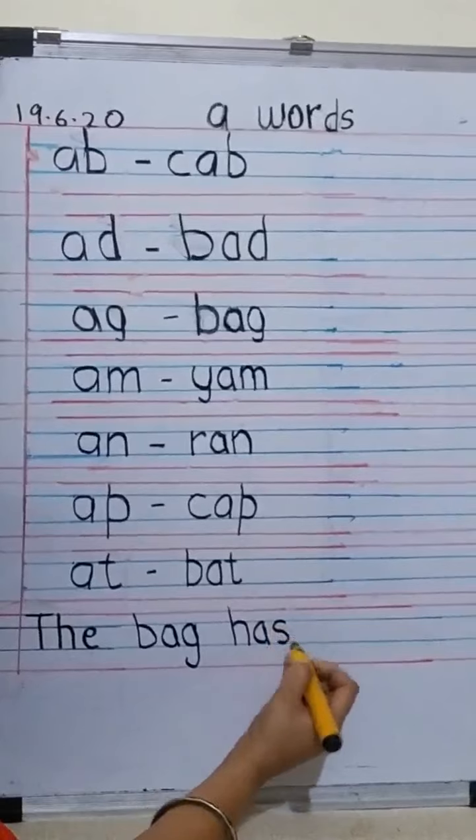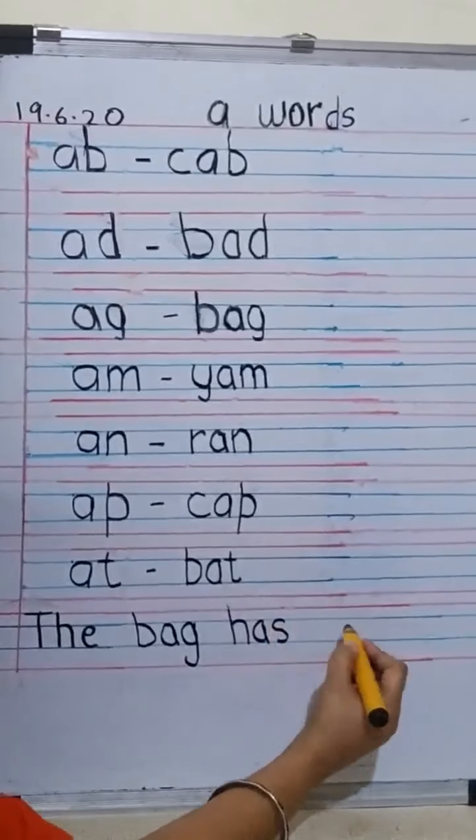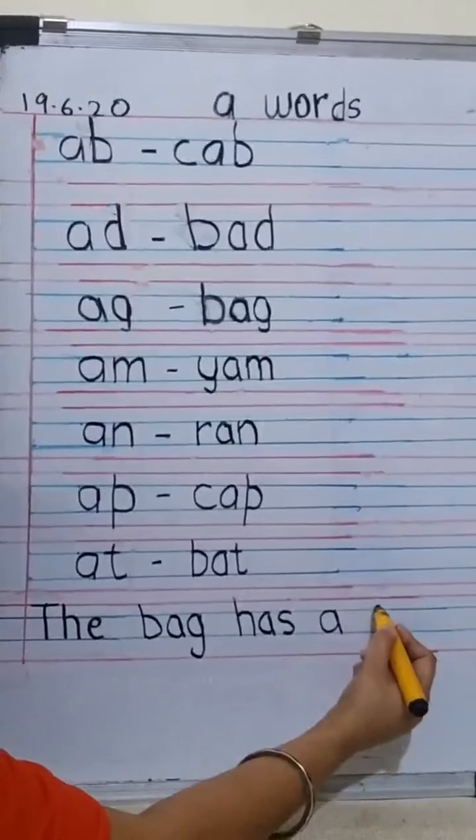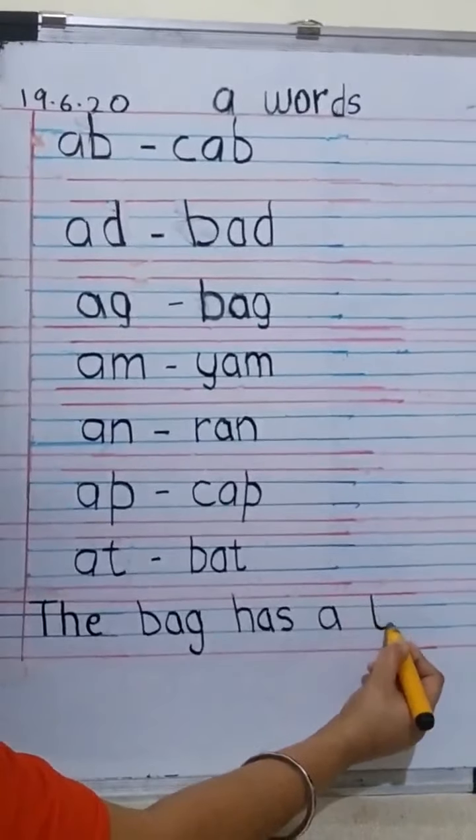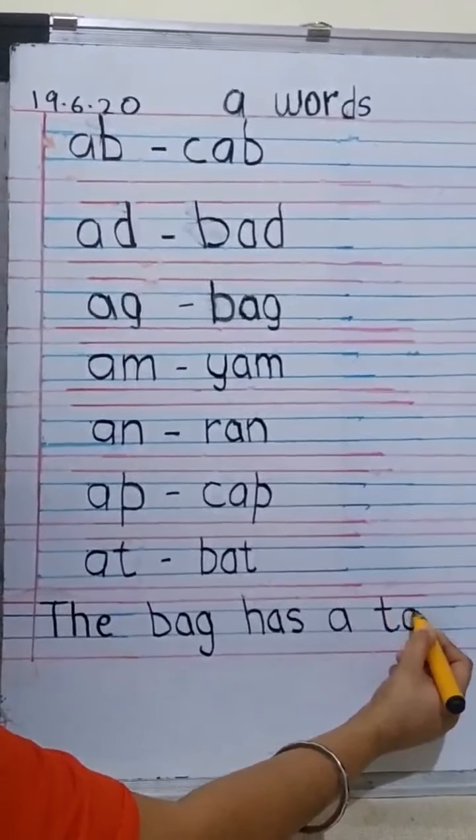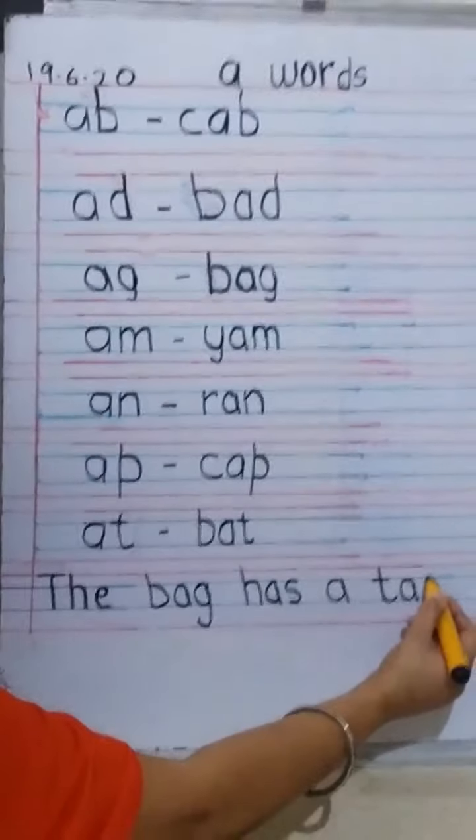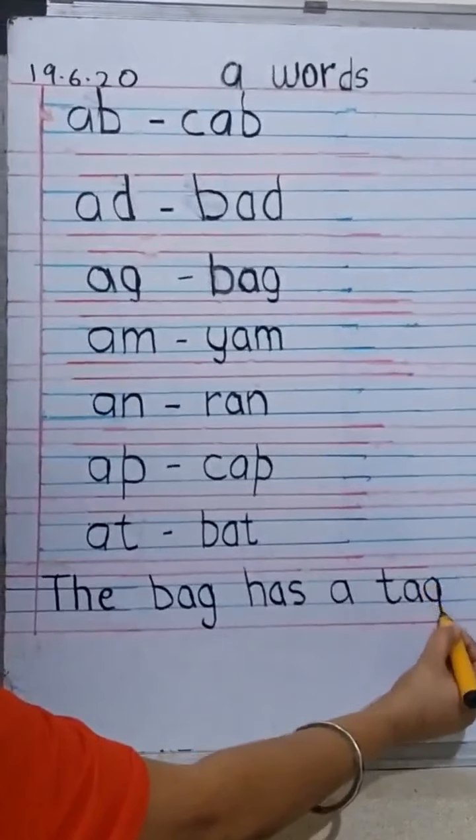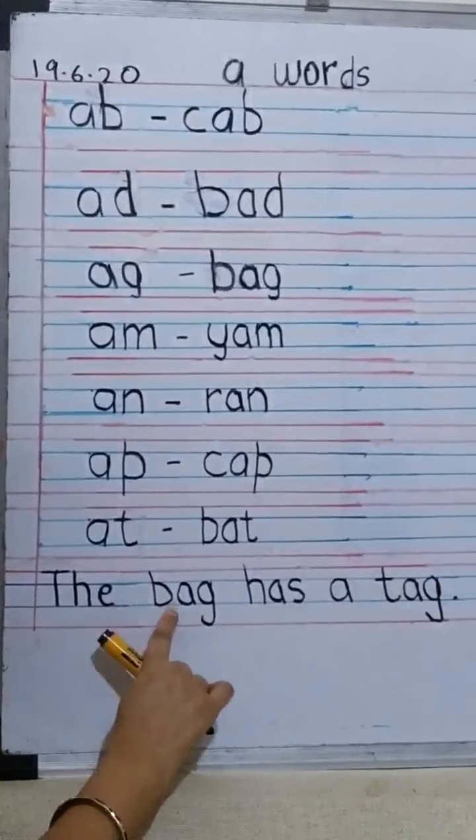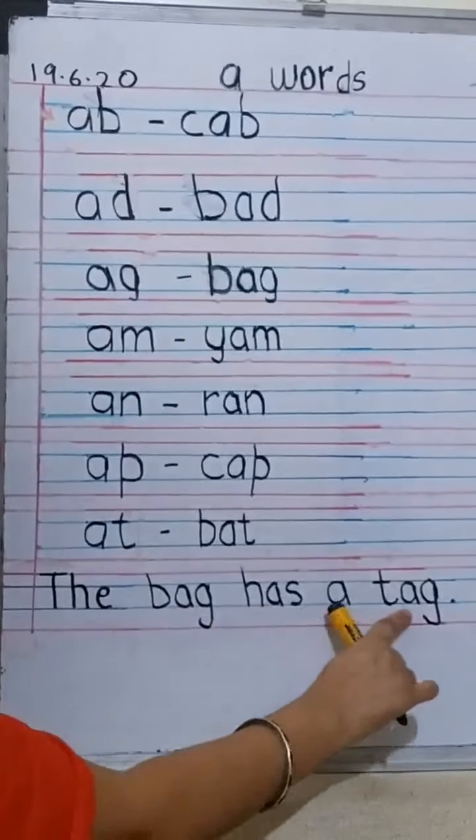Has. Again one finger space, A, again one finger space, T, A between the blue lines, and a G. Tag. And then we don't forget to give a full stop. So the bag has a tag.